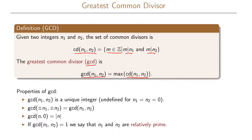There are a few important properties of the greatest common divisor. One property is that the gcd of n1 and n2 is always a unique integer, and it is undefined when n1 equals n2 equals zero. Another property is that the gcd of plus or minus n1 and plus or minus n2 is the same as the gcd of n1 and n2. Further, the gcd between integer n and zero is the absolute value of n. Finally, if the gcd of n1 and n2 is 1, we say that n1 and n2 are relatively prime.